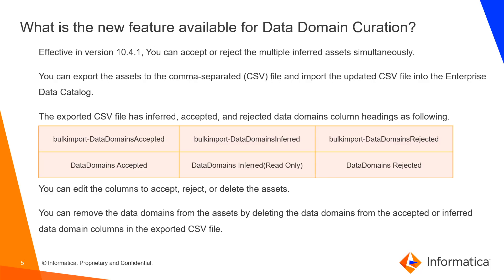What is the new feature available for data domain curation? Effective in version 10.4.1, you can accept or reject multiple inferred assets simultaneously. You can export the assets to a comma-separated file and import the updated CSV file into the data catalog. The exported CSV file has inferred, accepted, and rejected data domain column headings. You can edit the columns to accept, reject, or delete the assets. You can also remove data domains from assets by deleting the data domains from the accepted or inferred data domain columns in the exported CSV file.